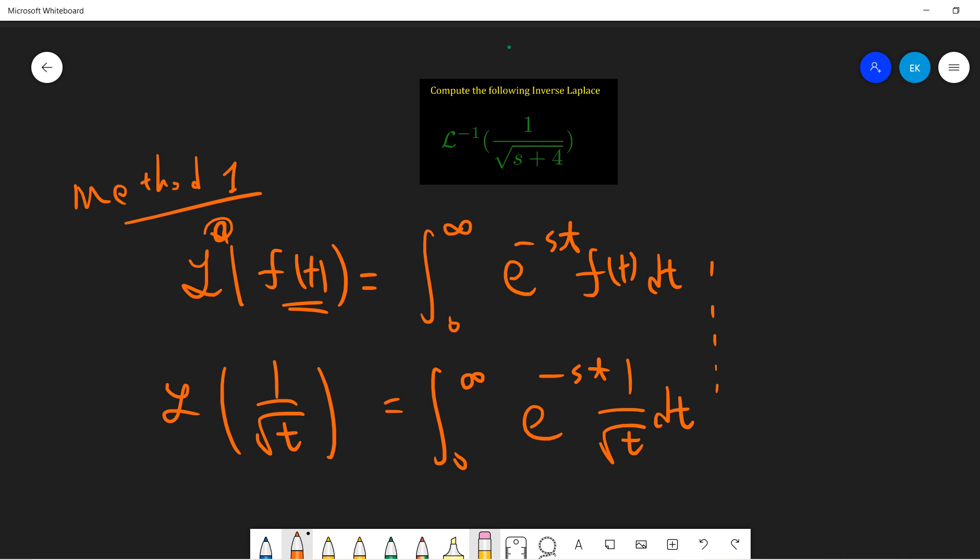Then, we can use a transformation that omega equals square root of t. So, this is 0 to infinity, exponential minus S of omega squared, and 1 over omega, so 2 omega d omega, which is dt.